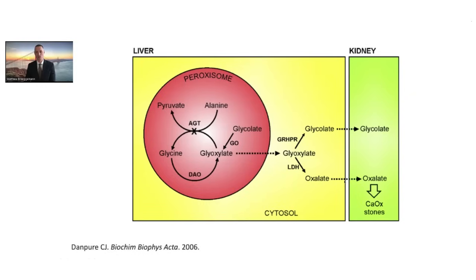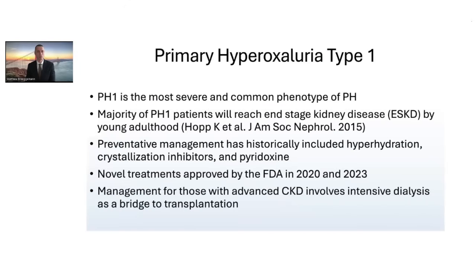This oxalate is eventually filtered by the kidney, where it can lead to adverse events such as kidney stones, nephrocalcinosis, and kidney disease. Primary hyperoxaluria type 1 is the most severe and common phenotype. The majority of PH1 patients will reach end-stage kidney disease by young adulthood. Preventative management has historically included robust fluid intake and crystallization inhibitors, including potassium citrate or potassium phosphate.